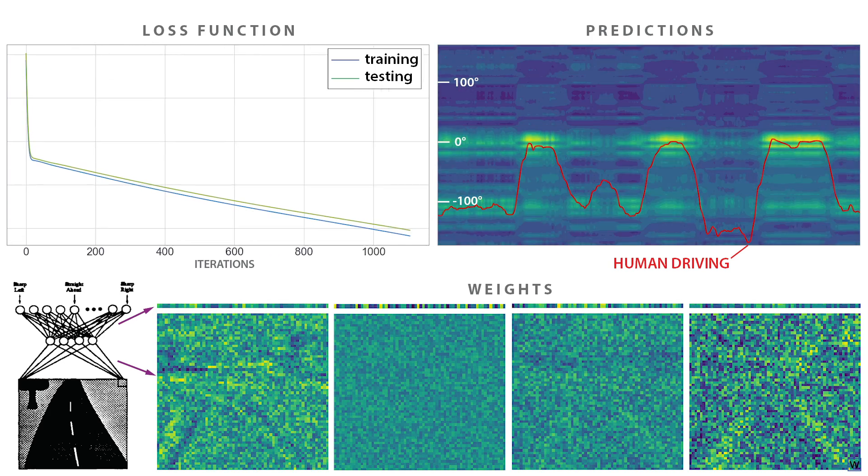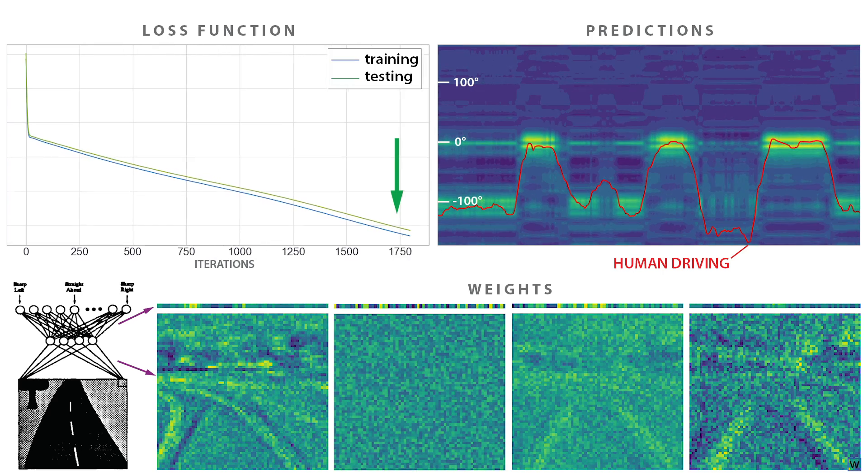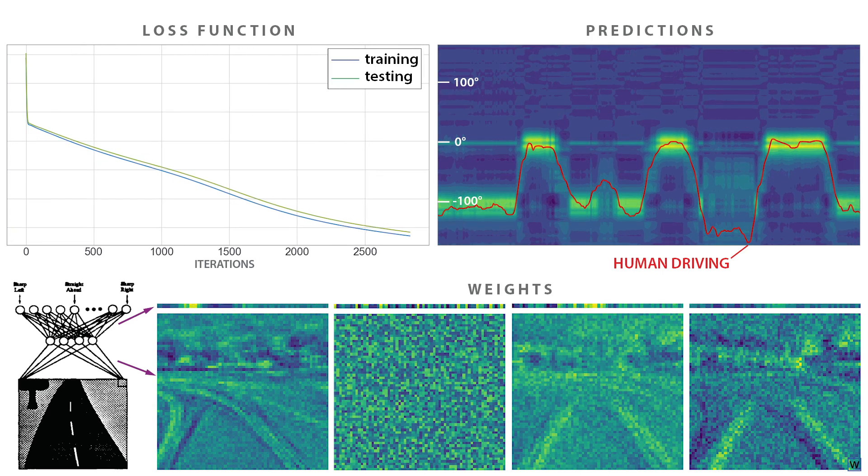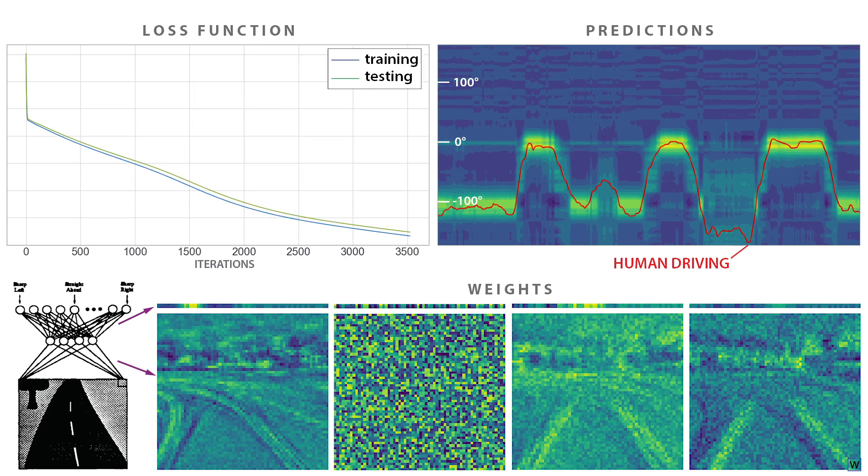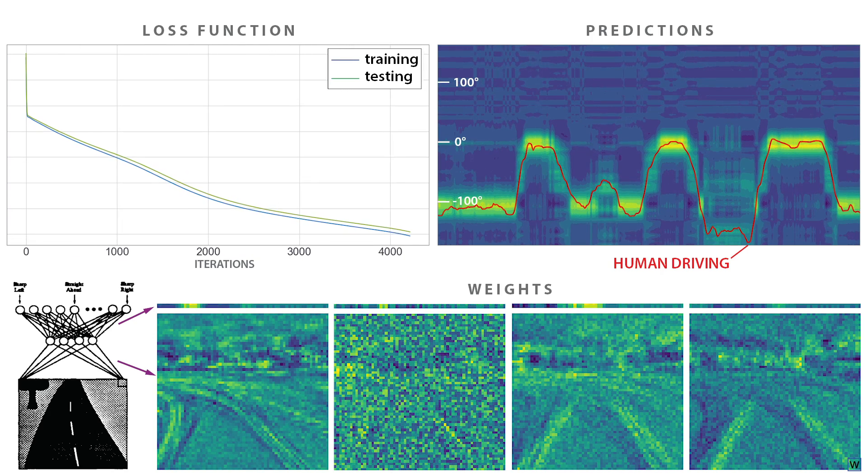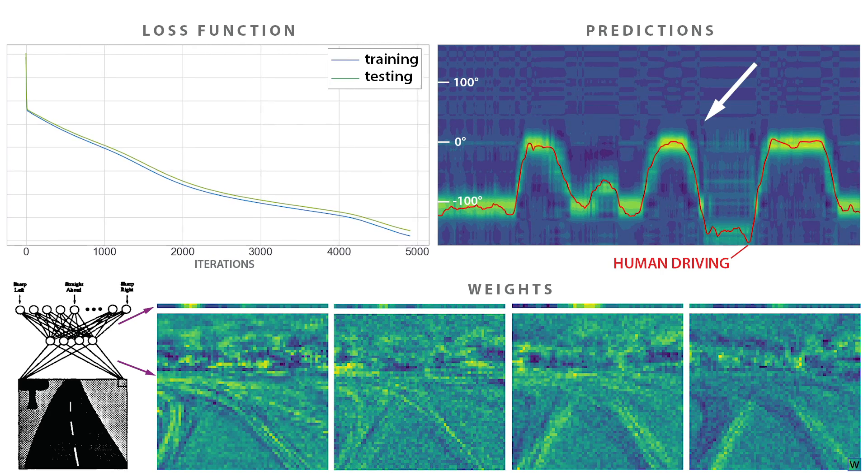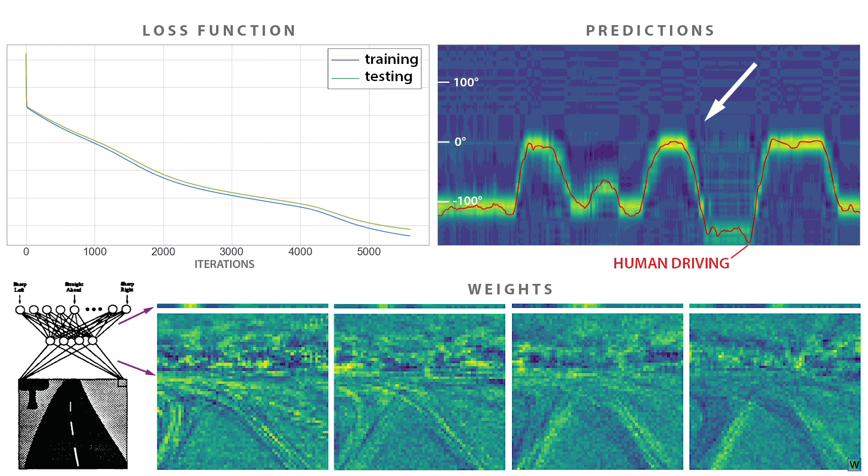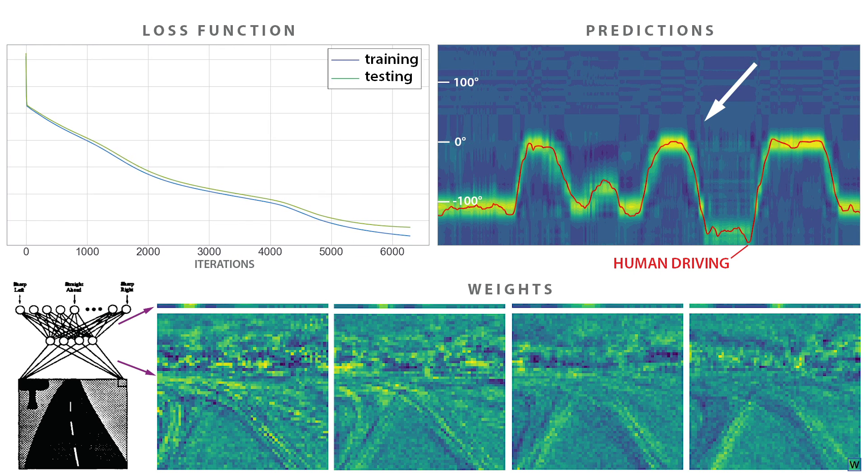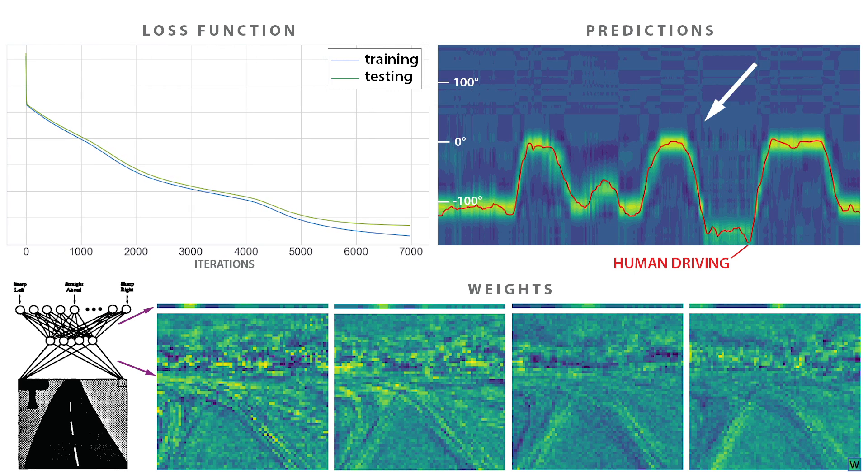As we train, notice that our cost function decreases on both our training and testing data, meaning that Alvin's predicted steering angles are getting closer to our human steering angles. We can see this directly on our test lap, where we see Alvin's predictions in yellow converge nicely to our human's steering angles. So remarkably, using only images and human steering angles, Alvin learned to steer around our track.